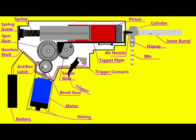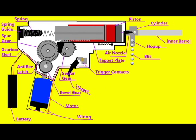The piston is then sent forward, forcing the air captured in the cylinder out of the air nozzle, pushing the BB through the hop up. Then the BB travels down the inner barrel and continues out of the gun and travels until it stops.